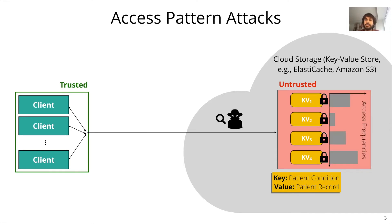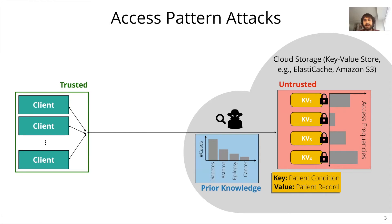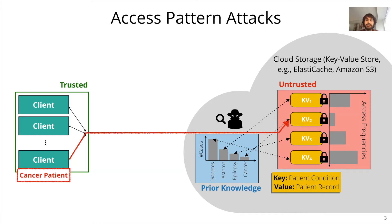In such attacks, the adversary — which in this case is an untrusted cloud provider — can observe how frequently specific patient conditions are accessed. The adversary also has prior distribution information about the underlying data; for example, it is aware of the relative frequencies of patient conditions, such as diabetes being three times as common as cancer. Equipped with this information, the adversary can correlate patient condition frequencies from prior knowledge with actual access frequencies, and can even guess if a subsequent access was made to a cancer patient record.